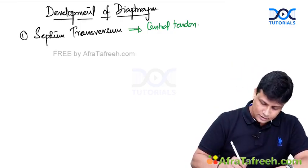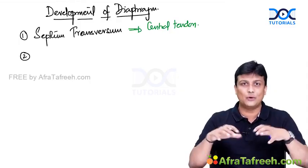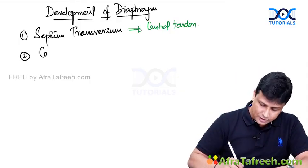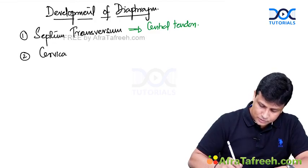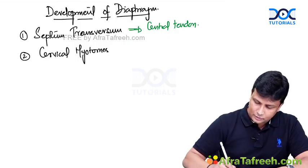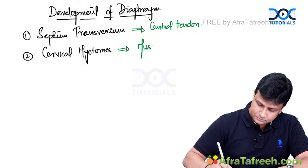Number two: if the central tendon is derived from septum transversum, then what about the muscular part of the diaphragm? Diaphragm is a musculotendinous structure — you also have muscle. The muscular part is actually derived from the cervical myotomes, which are the ones going to form the muscular part of the diaphragm.